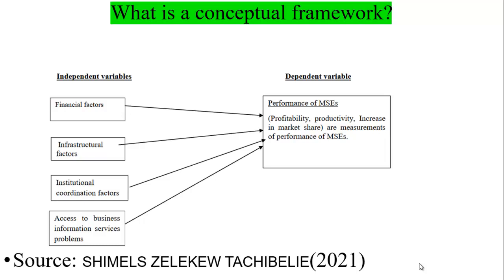A researcher called Schmalis, in 2021, measured the performance of micro and small enterprises in terms of profitability, productivity, and increasing market share. He then studied the relationship between financial factors, infrastructural factors, institutional coordination factors, and access to business information services as independent variables, and how they predict or affect the dependent variable — enterprise performance.